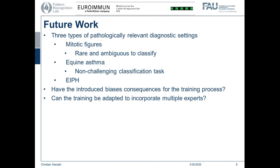In future work, we want to expand this study to three datasets. First, mitotic figures, which is a rare and ambiguous classification task done mostly by experts but highly relevant in clinical routine. Second, a non-challenging classification task where it is easy to distinguish between the five classes. And again EIPH, to reproduce our results from the first study. We also want to see if the introduced biases have consequences for the training process — specifically whether training algorithms on biased datasets leads to decreased classification accuracy. Additionally, we want to explore incorporating multiple annotators into the training process to benefit from multiple expert opinions on the same image.